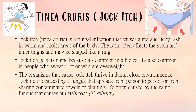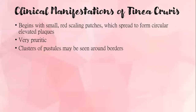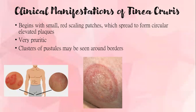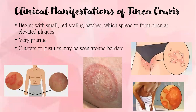Jock itch is caused by a fungus that spreads from person to person or from sharing contaminated towels or clothing. It is often caused by the same fungus that causes athlete's foot, trichophyton rubrum. For clinical manifestations, it begins with small, red scaling patches which spread to form circular elevated plaques. It is very pruritic. Clusters of pustules may be seen around the borders.